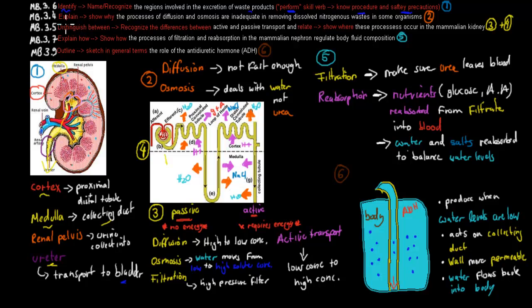The next dot point says 'explain' — show why the processes of diffusion and osmosis are inadequate in removing dissolved nitrogenous waste in some organisms. Diffusion is not fast enough — we need to remove all the urea across a very small fine area, and diffusion alone wouldn't do that fast enough. Osmosis isn't good enough because it only deals with water, not urea — we can remove water but can't remove urea through osmosis. So we need different types of processes, and filtration will be one of them.